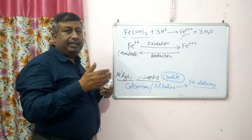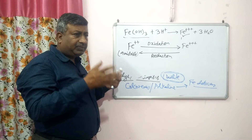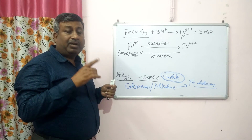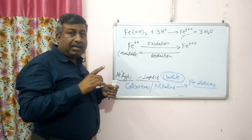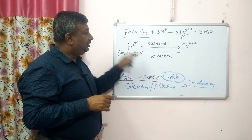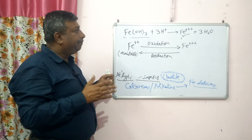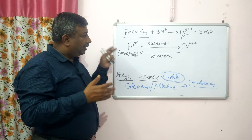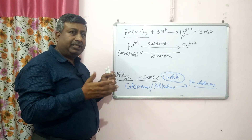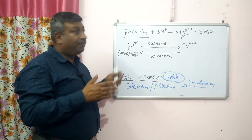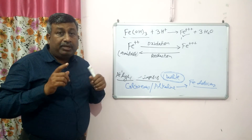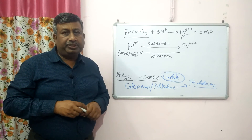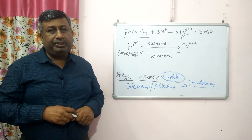Under waterlogged conditions, due to excess moisture, reduced conditions prevail, and iron availability increases due to reduction of ferric to ferrous. Both oxidized/reduced conditions and soil pH affect iron availability. pH affects iron through hydroxyl species formation, particularly in calcareous and alkaline soils where insoluble ferric hydroxide forms reduce iron availability. This is the impact of soil pH on iron availability. Thank you very much.